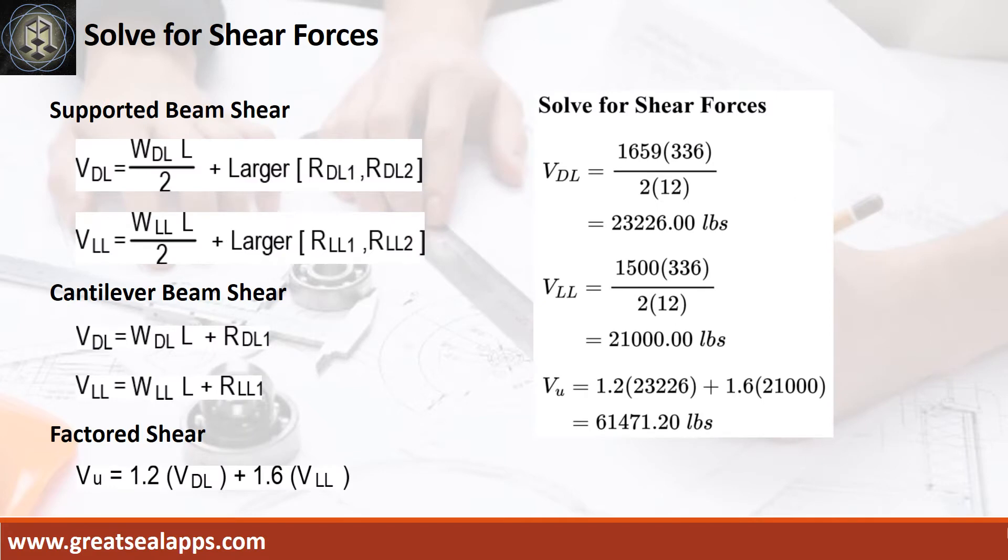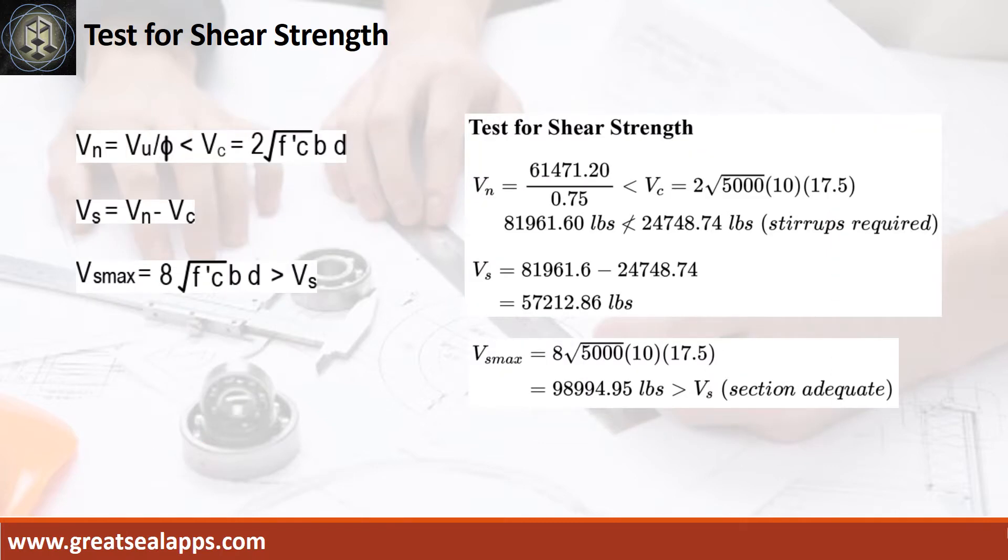The shear force for dead load is 23,226 pounds. The shear force for live load is 21,000 pounds, for a maximum shear force of 61,471.2 pounds. The nominal shear force is 81,961.6 pounds, greater than 24,748.74 pounds concrete capacity.